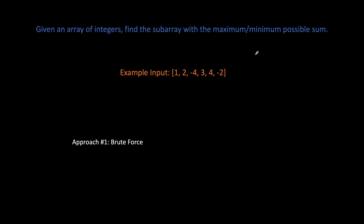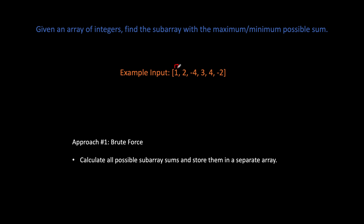Let's apply the brute force approach: calculate all possible subarray sums and store them in a separate array. Start by calculating the subarray sum from the first element — that's one. The first two elements give three. Continue to the first three, first four, and all the way to the bottom. Then move to the second element, calculate each sum down, then the third element, and so on — processing the array over and over again.